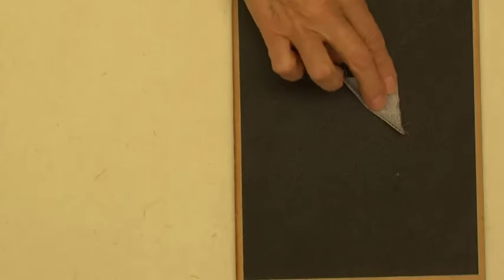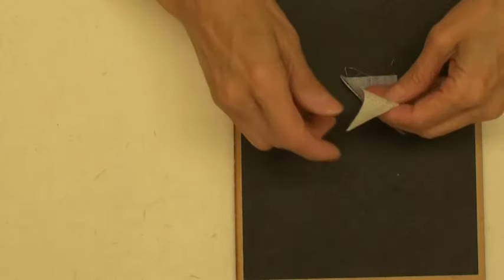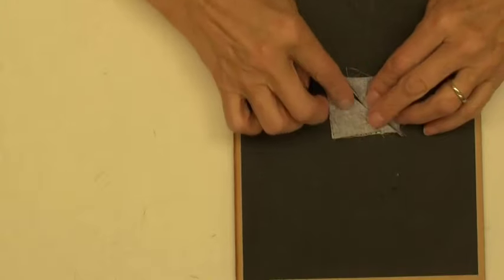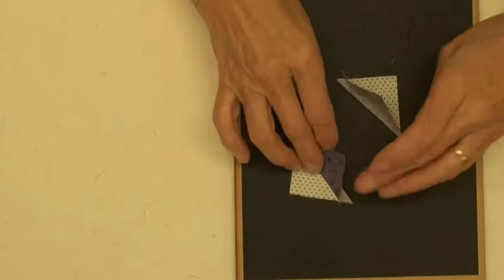Then I'm going to take all of those pieces and I'm going to cut them in half. Just like so. I'm going to press them all towards the color.